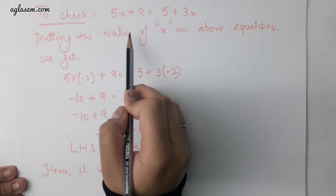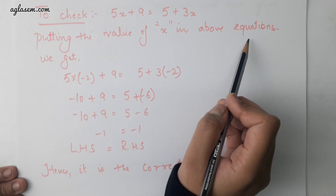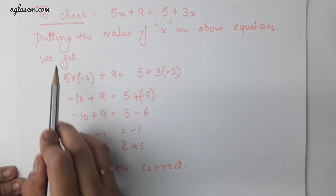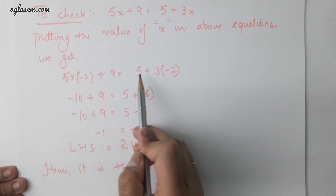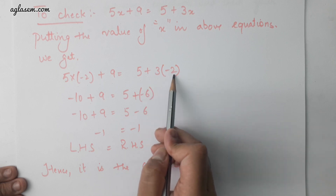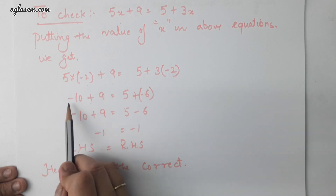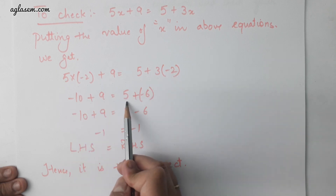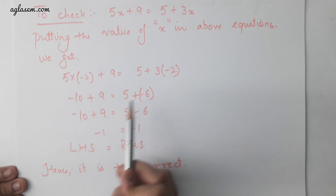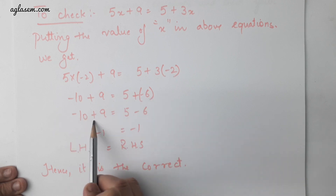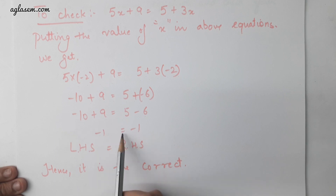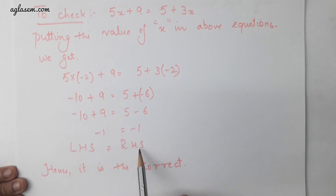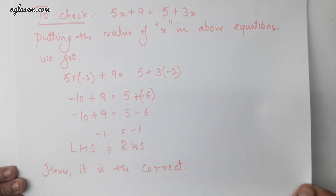To check, we will put the value of x in the above equation. We get 5 into minus 2 plus 9 is equal to 5 plus 3 multiplied by minus 2. Minus 10 plus 9 is equal to 5 minus 6, so minus 1 is equal to minus 1. Therefore, LHS is equal to RHS and hence it is correct.